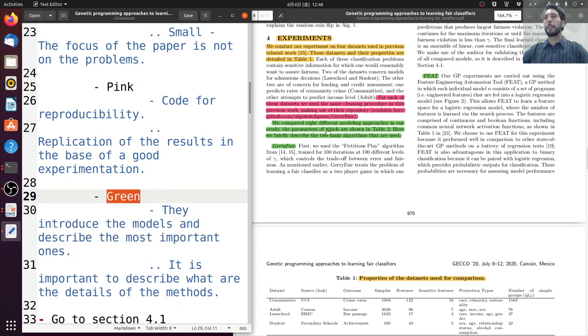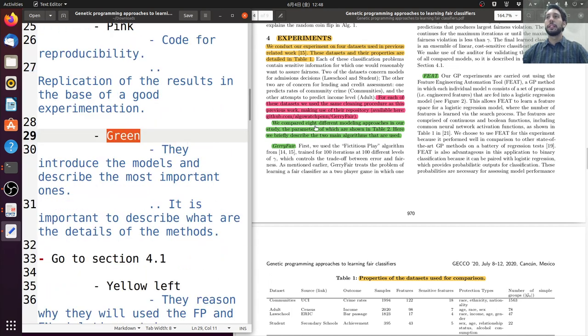When we move to the green part, highlighted here, this is where they introduce the models and describe the most important models. The Jerry Fair and the Fit. They say, probably they are more important because they are the ones they proposed, introduced. So that's why they get into more details, because it's something new.